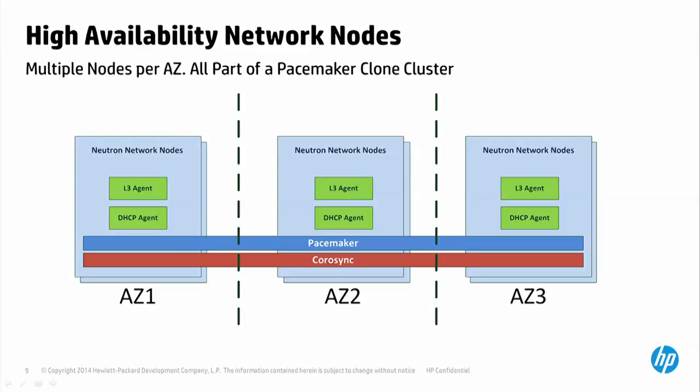The key component for Neutron are the network nodes. Multiple network nodes run in each of the three AZs in each region. The six network nodes shown are all part of the same cluster — Pacemaker is used in a clone cluster rather than active-passive, so all nodes are part of the same cluster within a region. A custom resource agent manages the nodes themselves. Note that 'resource agent' is a Pacemaker term and should not be confused with L3 agent or DHCP agents — it is an overloaded term.